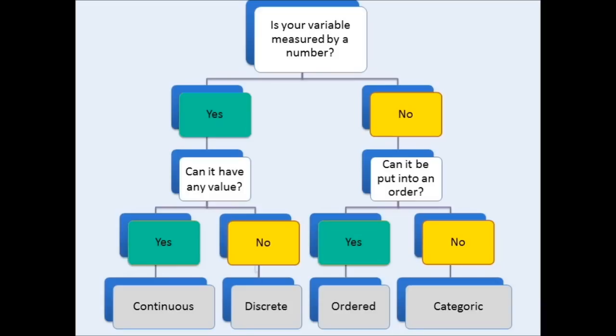If your independent variable isn't a number, however, there are two more options for what type of variable it could be. It could be an ordered variable or a categoric variable. If you can put the words which are used to describe your independent variable into an order, then it is an ordered variable. If you can't, however, then it is a categoric variable. That is probably very confusing at the moment, so we'll go through some examples to help make it a bit clearer.